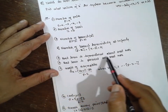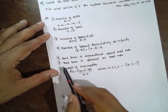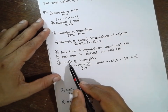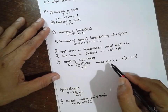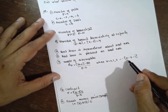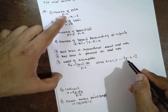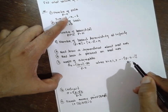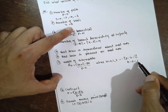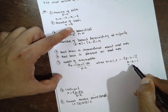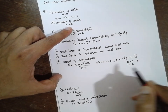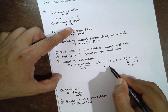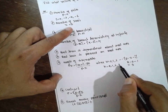The root locus is symmetric about the real axis. Now for the angle of asymptotes: p is 4, z is 0, so p minus z minus 1 equals 3. Therefore k takes values 0, 1, 2, and 3.